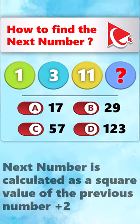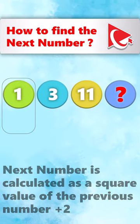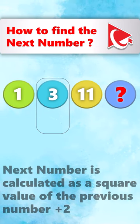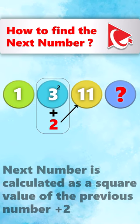Let's look at the example. The first number is 1. 1 squared plus 2 equals 3. Then comes the next number, which is calculated as 3 squared plus 2, which equals 11.